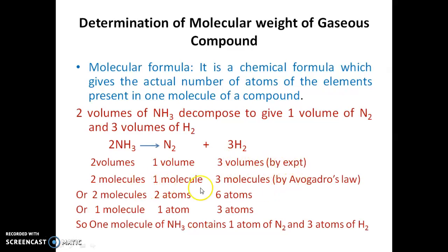If you consider Avogadro's law, you will find two molecules of ammonia gives you one molecule of nitrogen and three molecules of hydrogen. So, similarly, you break down to one molecule.